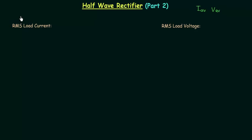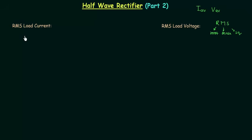In this presentation I will derive the expressions for RMS load current and RMS load voltage. RMS is an abbreviation for root mean square. We call it root mean square because first we calculate the square, then we calculate the mean of the square, and finally we take the square root of the mean.